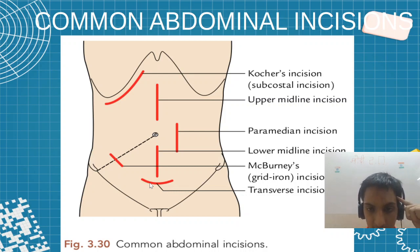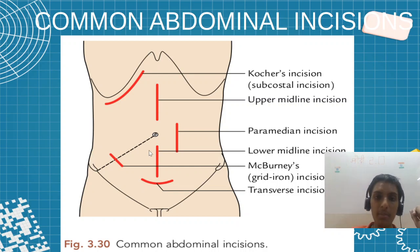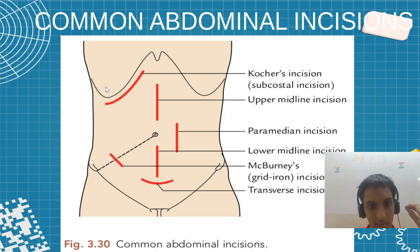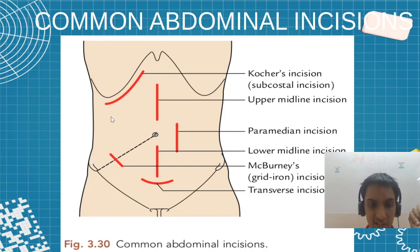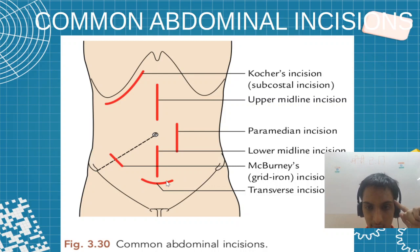So let us see now. The upper and lower midline incision will be in the linea alba — remember, in the linea alba, the upper part and lower part is the incision point. Below the 12th rib, we will have the Kocher's incision. Here will be the McBurney's incision, here the transverse incision, and here the paramedian.